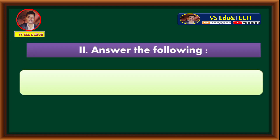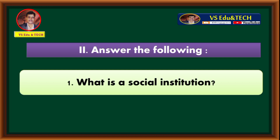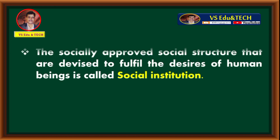Second main: answer the following. First question — what is a social institution? The socially approved social structures that are devised to fulfill the desires of human beings are called social institutions.